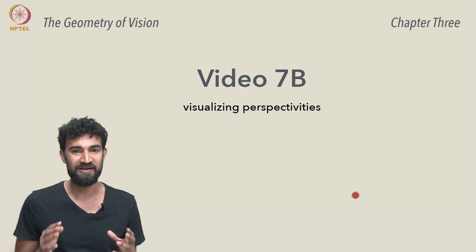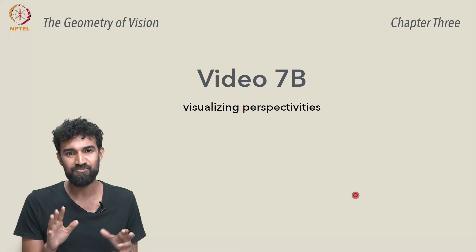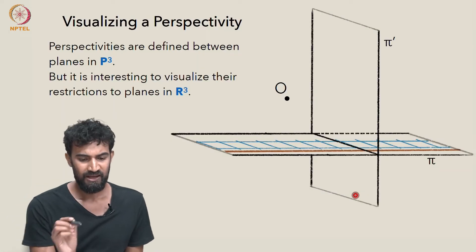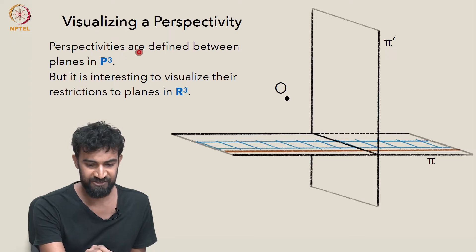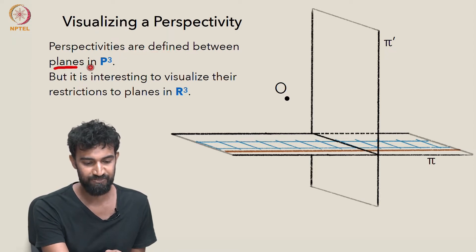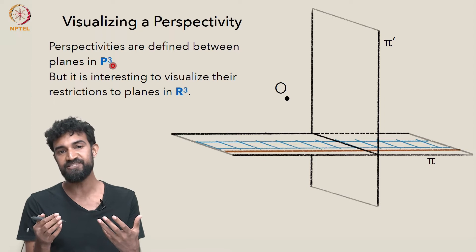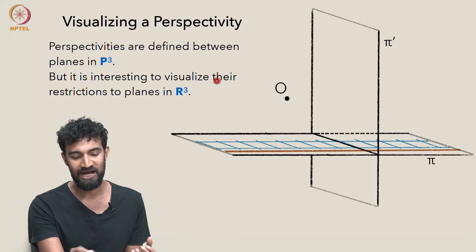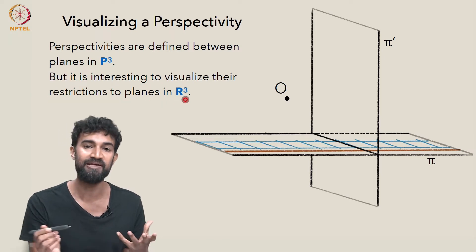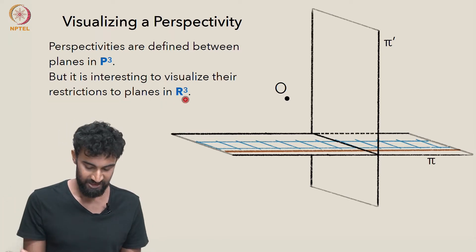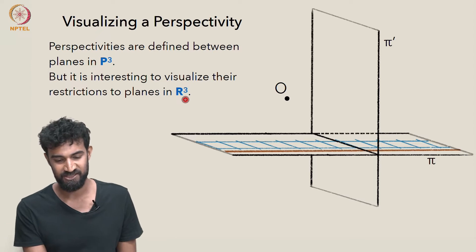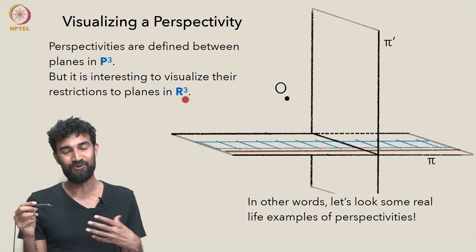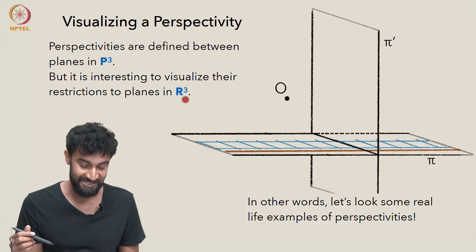Now that we've defined perspectivities, I want to spend some time trying to visualize them better. In particular, we've defined perspectivities between planes in the extended space P3. But it's still very interesting and valuable to visualize the restrictions to planes in R3, the ordinary Euclidean space. So let's look at some real-life examples or interpretations of perspectivities.